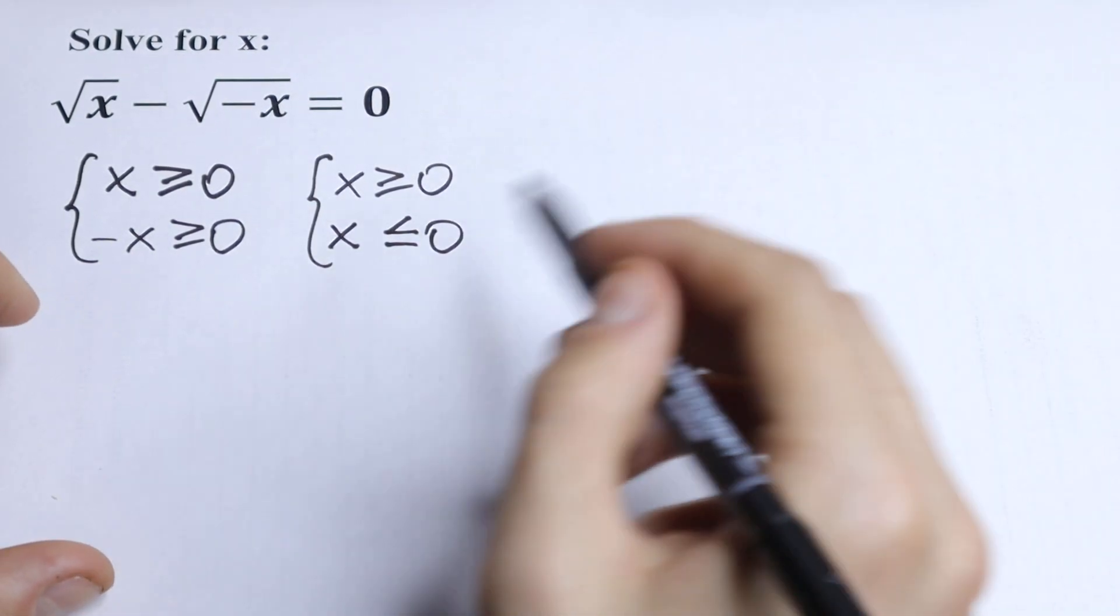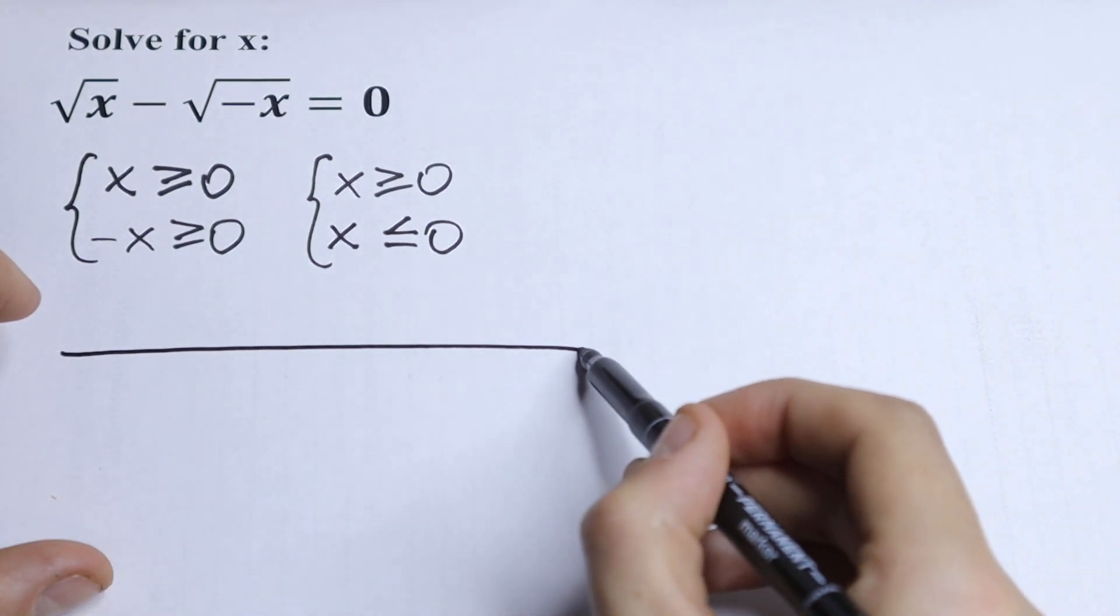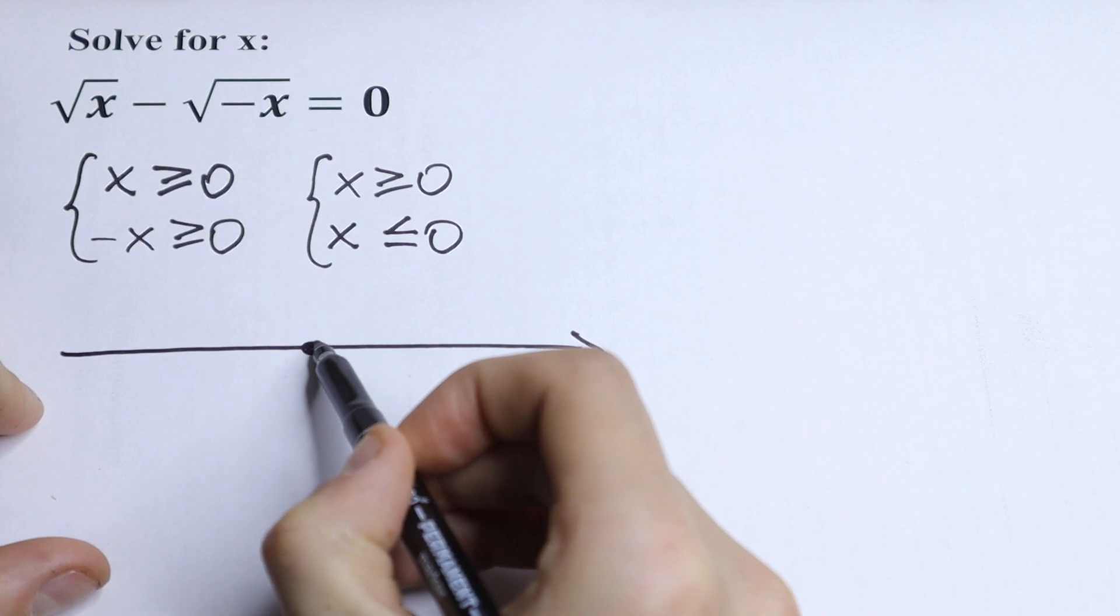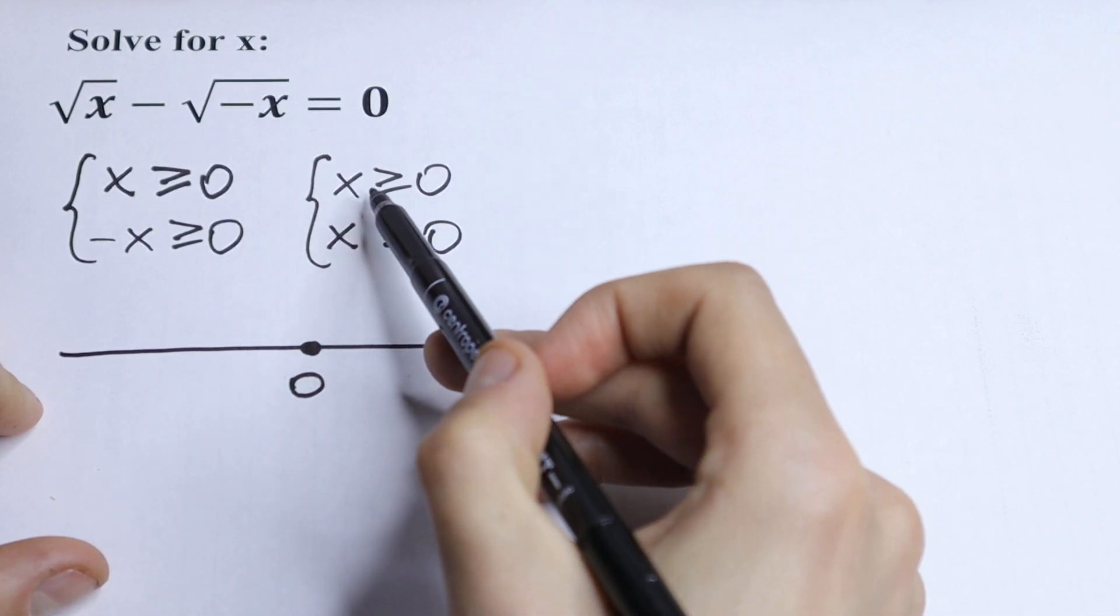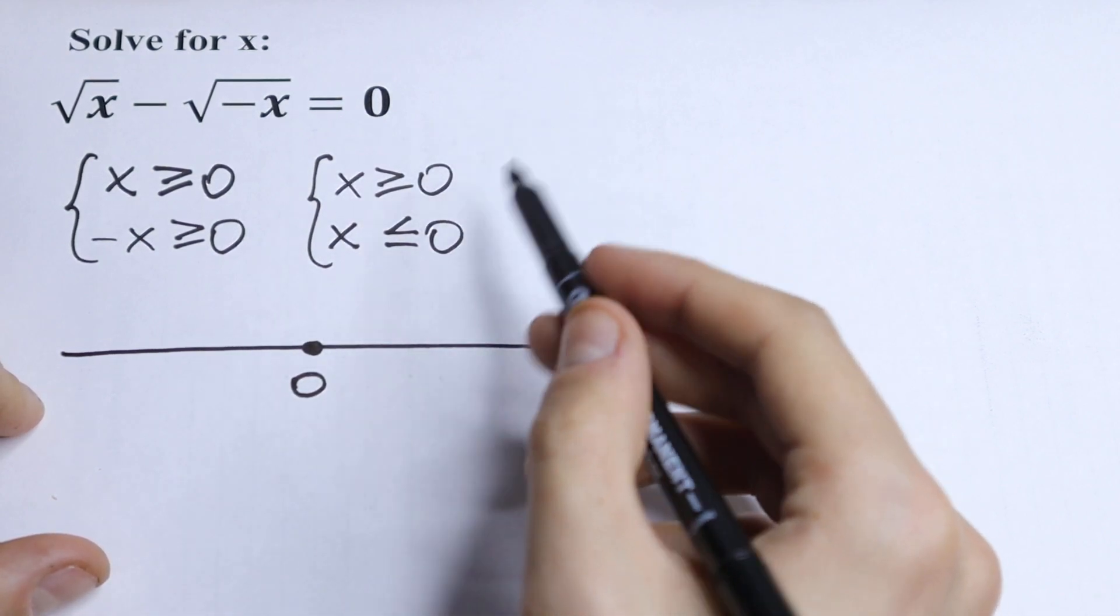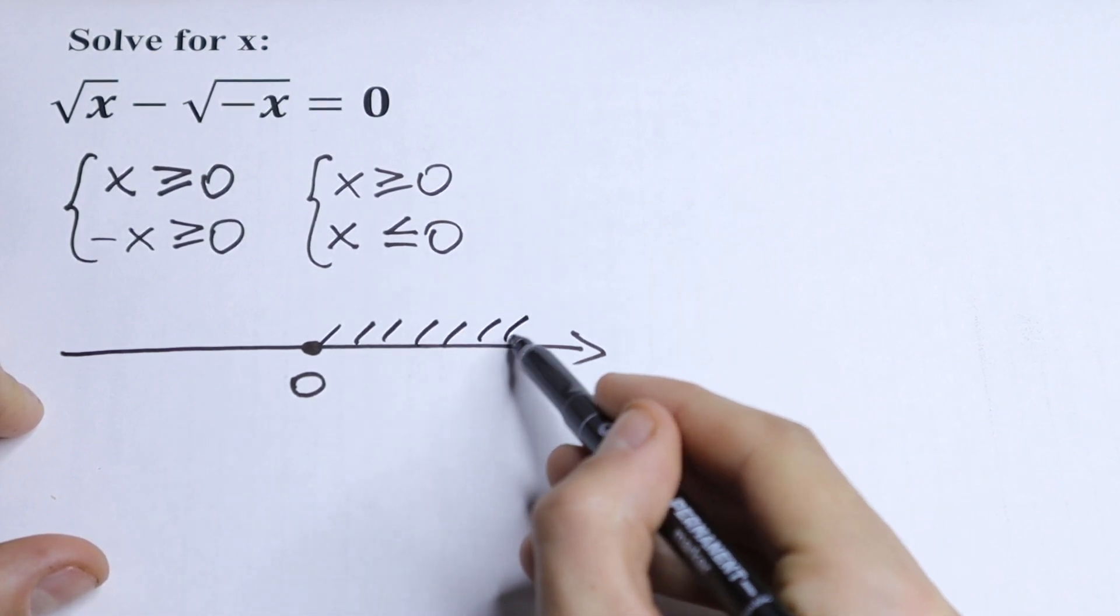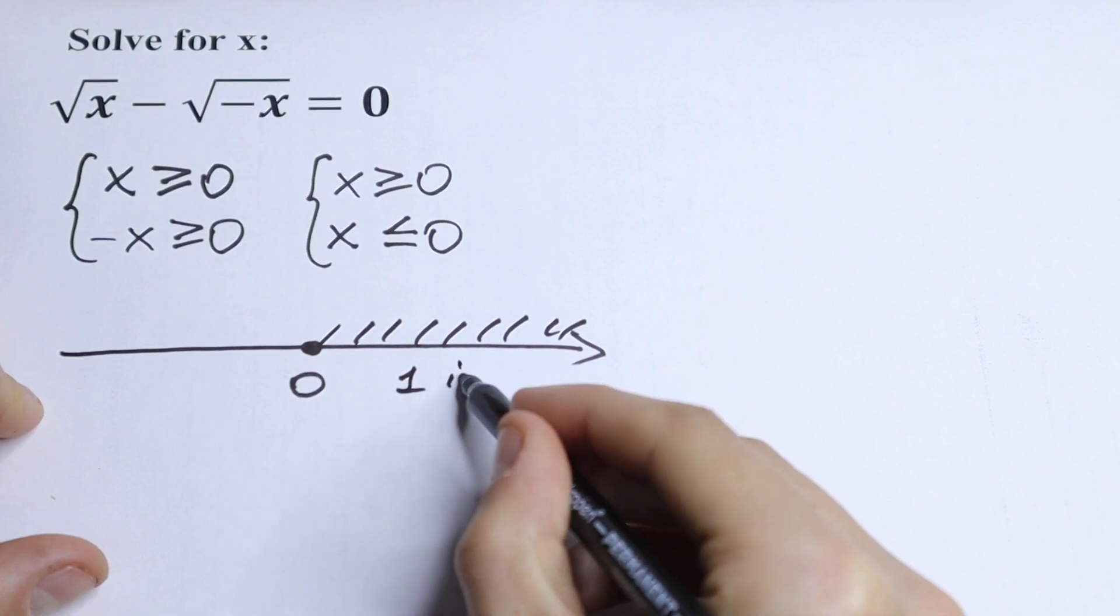So I wanted to draw a real quick graph right here. Because we have our zero right here. And the first inequality works when x is greater or equal to 0. So this is our first inequality.